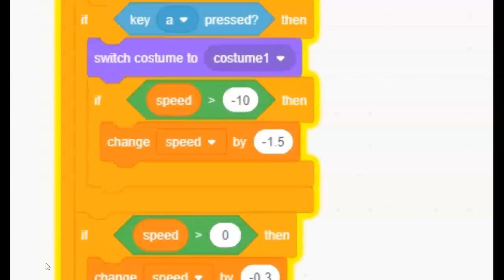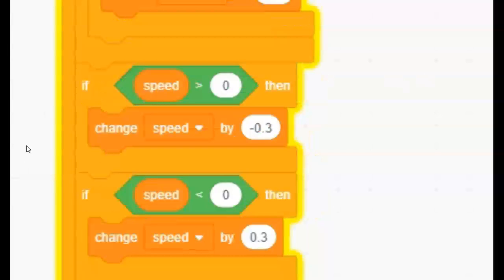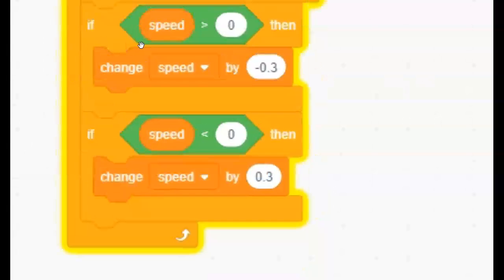And also if speed is more than 0, it changes speed by negative 0.3, which removes 0.3. And then if speed is less than 0, which is the negative numbers, then it adds 0.3.